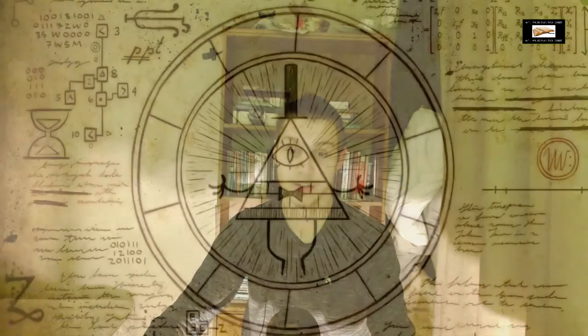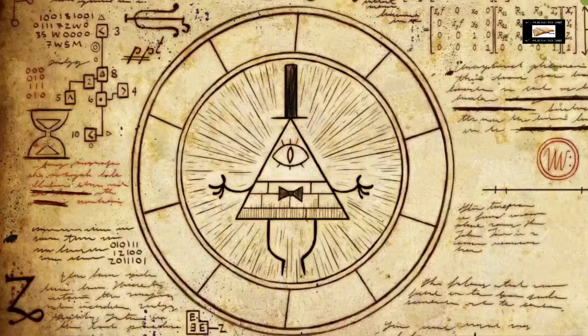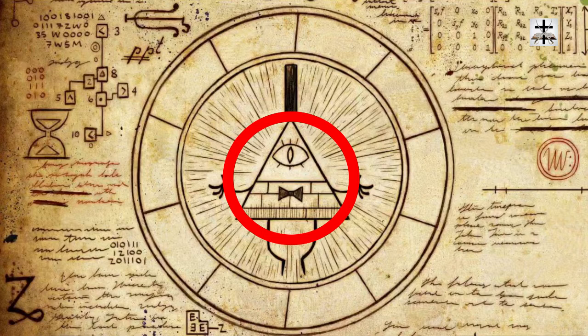Satan is more subtle than any beast in the field — very subtle and sly, just like a snake, which is why Satan comes as a snake in Genesis chapter 3. Here's the next picture from Gravity Falls, where they have a chart with again the Illuminati all-seeing eye character — the triangle right there, blatantly in your face — subliminal Illuminati messaging.